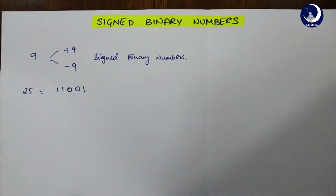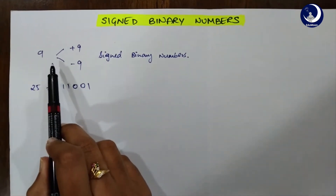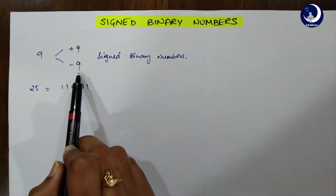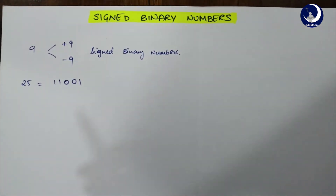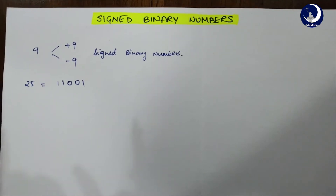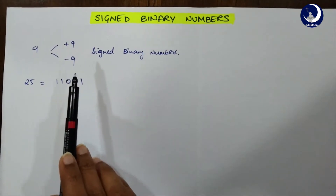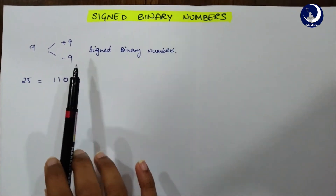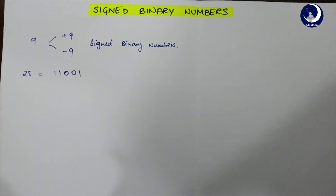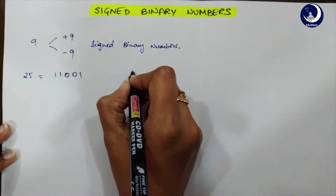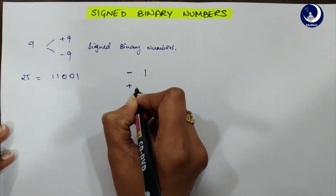Why do we need signed binary numbers? As humans we can differentiate between a plus 9 and a minus 9, but computers cannot understand the difference between plus 9 and minus 9, as they can only understand two digits: 0 and 1. So in order to represent plus 9 and minus 9 and help the computer differentiate between those two values, we use signed binary numbers. We use 1 for negative and 0 for positive.